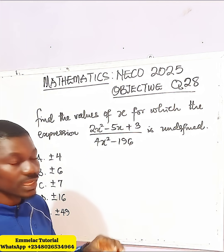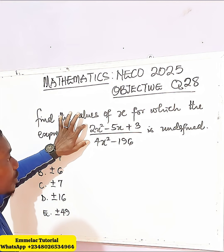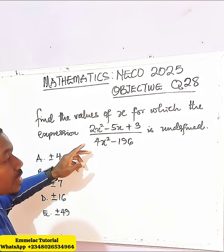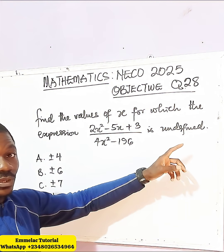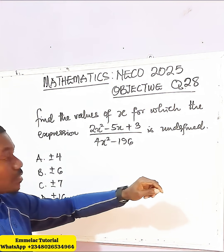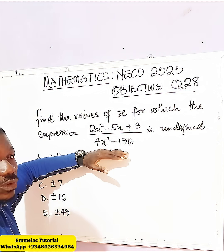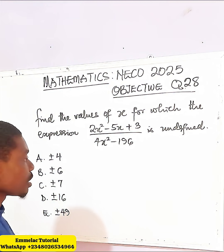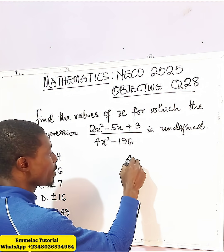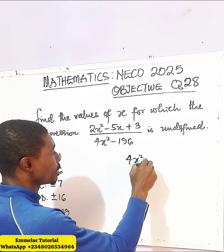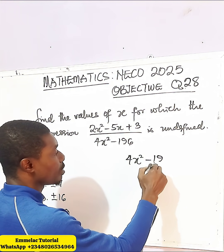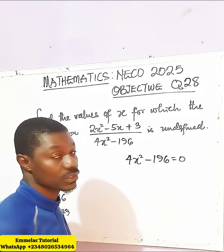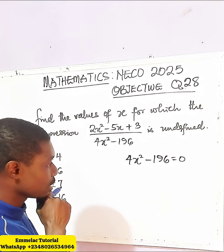Now, for any expression in the form of a fraction like this, that seems to be undefined, it implies that the denominator equates to zero. So what does that mean? It means that 4x squared minus 196 equals zero.